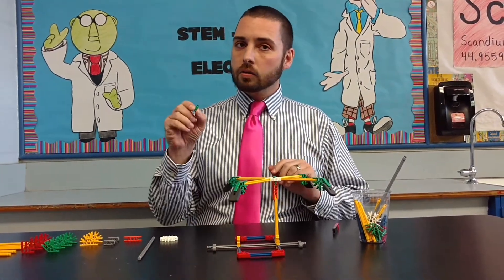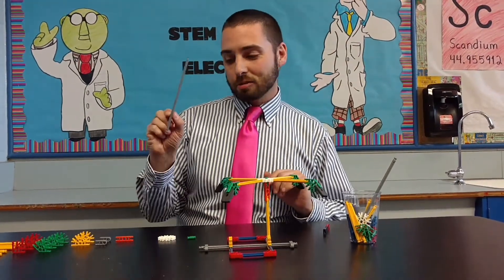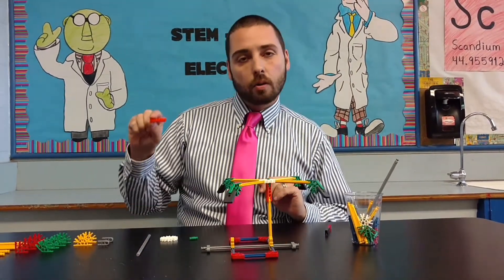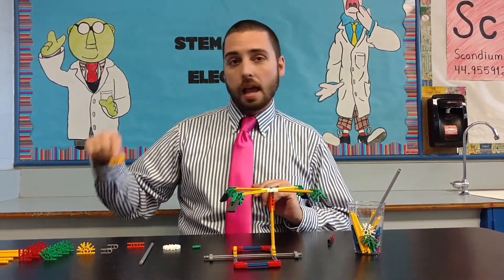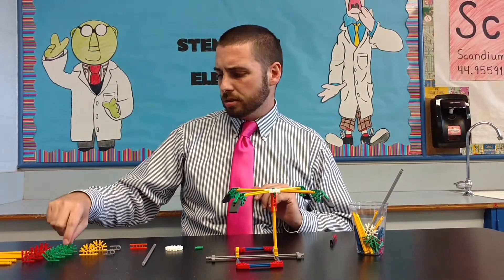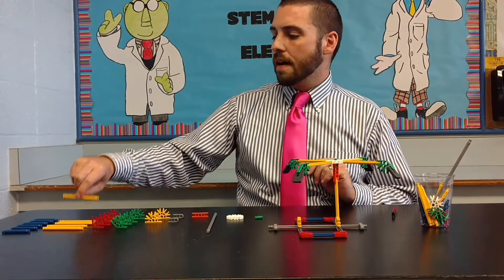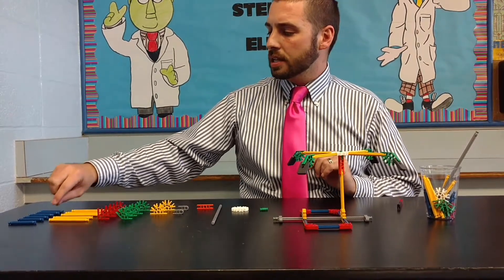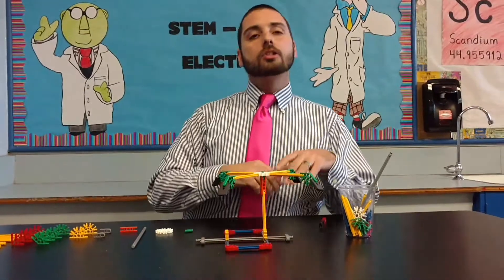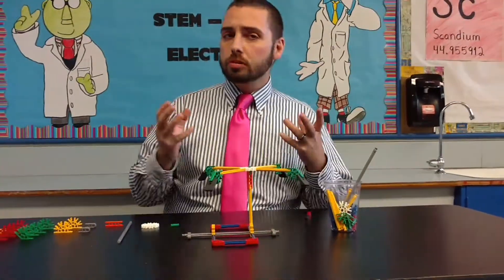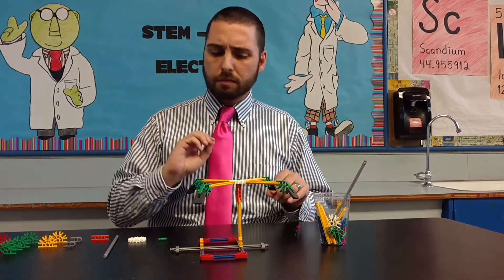That being said, we got a green rod, a white connector, a gray rod, an orange connector, two gray connectors, two yellow connectors, four green connectors, four red connectors, five yellow rods, and six blue rods. In the odd case you wish to duplicate our activity with your children, that's important information for you to know.